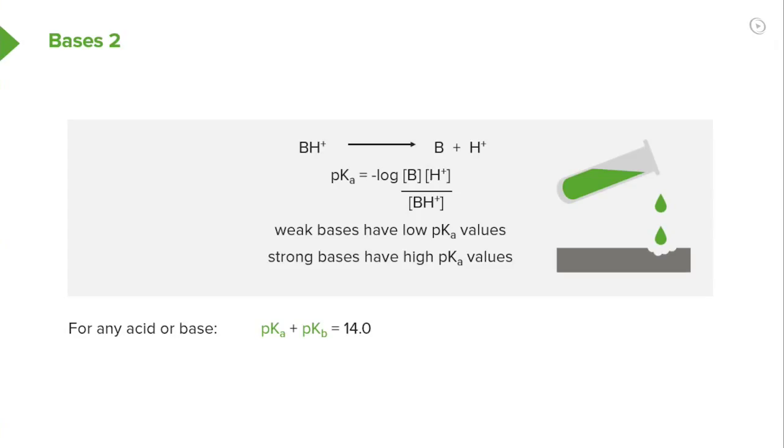Weak bases therefore have very low pKa values, and strong bases have very high pKa values. And when we consider any acid or base, we need to know or should be aware that pKa + pKb = 14.